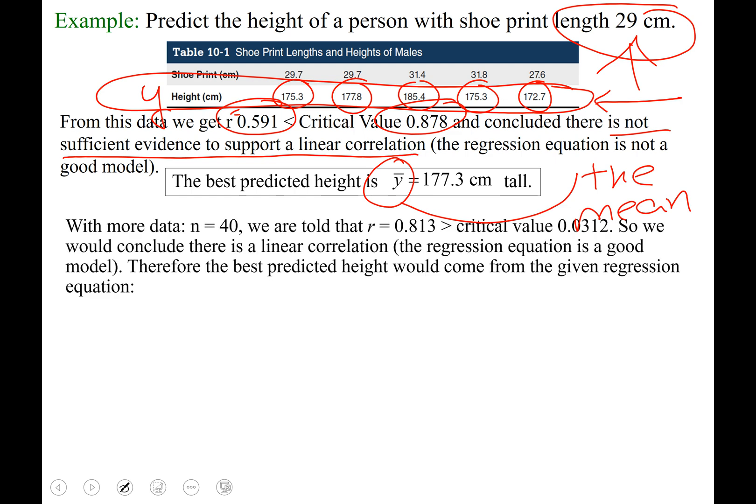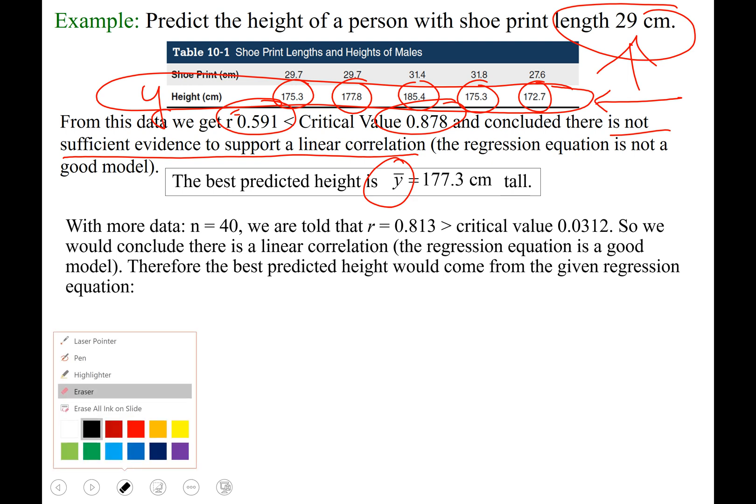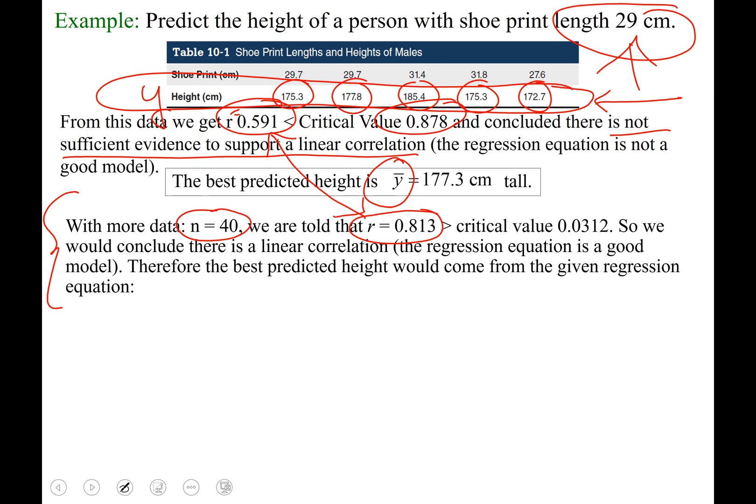Let's change the scenario. Let's say that we gather more than five pairs of data. This time, we're going to gather 40 pairs of data. We're going to get 40 males, find their shoe print lengths, pair them up with their heights, and see if there's a correlation. If we were to do that, we found that our r this time is 0.813. That is much higher than our r from the last time, much closer to one, which means it's a much stronger correlation coefficient.